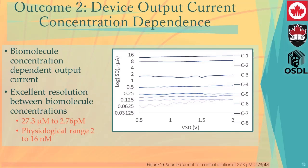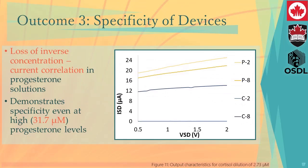Our third outcome demonstrates the specificity of our devices to cortisol. With cortisol binding, we demonstrate a clear inverse correlation between concentration and output current. This correlation is lost when using progesterone — demonstrating progesterone levels of 31.7 micromolar and 31.7 nanomolar show a loss of that same inverse correlation, which would indicate binding.